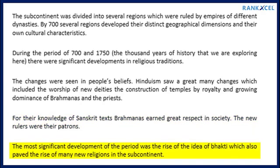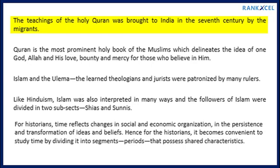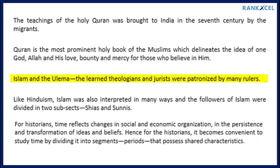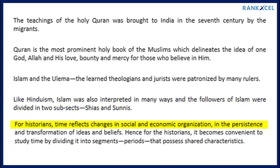The most significant development of the period was the rise of the idea of bhakti, which also paved the way for many new religious movements. The teachings of the Holy Quran were brought to India in the 7th century by migrants. The Quran is the most prominent holy book of Muslims, delineating the idea of one God, Allah, and His love, bounty, and mercy for believers. The ulama — learned theologians and jurists — were patronized by many rulers. Like Hinduism, Islam was also interpreted in many ways, with followers divided into two subsects: Shias and Sunnis.